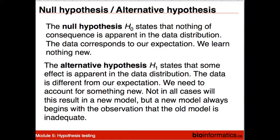That's what we're looking for in science. We don't try to confirm the same old thing over and over again. We try to find new things that we can publish in Nature or Cell or the Journal of Irreproducible Results. We need to account for something new. Not in all cases will this result in a new model, but the new model always begins with the observation that the old model is inadequate.